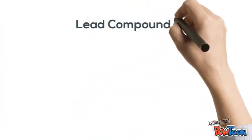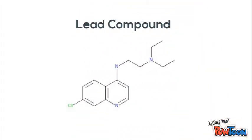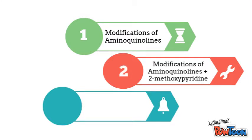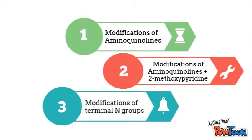Based on the lead compound, we decided to modify the molecule structure to increase its activity. There are three main groups of changes that we've done. The first one is the modification of the aminoquinolins. The second one is the modification of aminoquinolins plus 2-methoxypiridine. And the third one is by using different terminal N groups.